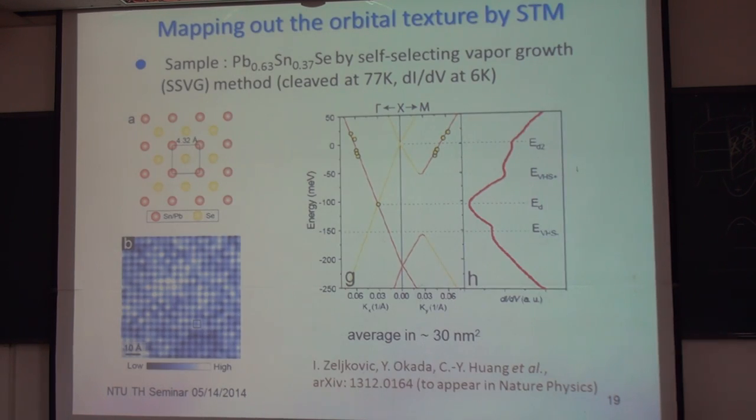And recently we performed, not I performed, my collaborator performed an STM experiment. They tried to figure out the orbital texture of this Dirac surface state. And so basically, well this is just to show the sample is okay, right? And we have very nice match with this band structure calculation. This is the I dI/dV curve.